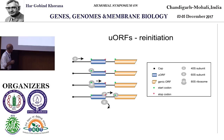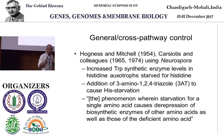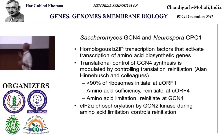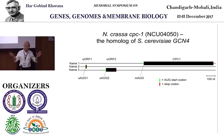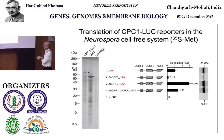Finally, reinitiation - where the ribosome actually doesn't fall off but reinitiates. The classic example is cross-pathway control GCN4, which is a bZIP protein. In Saccharomyces, ribosomes choose to initiate at uORF1; they all initiate at uORF1, then initiate at uORF4 or downstream. We thought Neurospora was going to be just the same as GCN4. So we did some in vitro experiments and we saw a larger band - 35S-methionine - a larger band, which puzzled us.